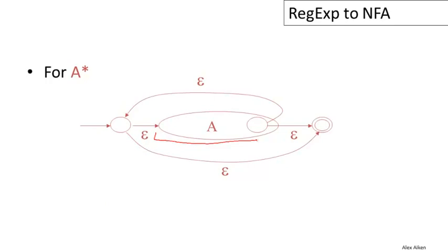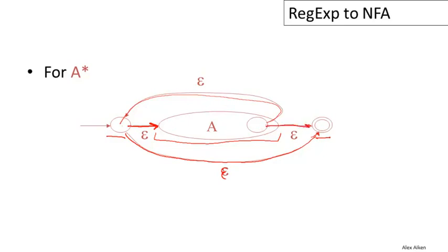Finally, the most complicated case: for iteration A-star, we have the following construction. The machine for A is embedded inside, and we add a new start state and a new final state. Since epsilon is always in the language of A-star, there's a direct epsilon transition from the new start state to the new final state, guaranteeing the empty string is accepted. Otherwise, we can make an epsilon transition to the start state of A and execute the machine. From the final state of A, we can loop back to the start state of the whole machine to iterate as many times as we like, or we can transition to the final state of the compound machine to conclude. So this machine recognizes zero or more strings in the language of A.